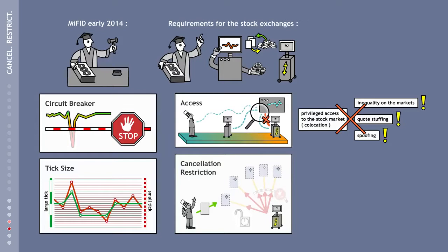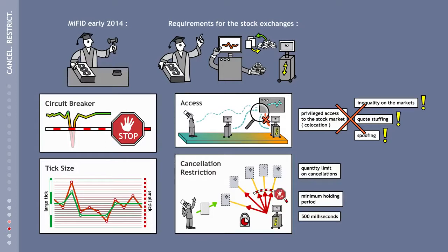Likewise, stock exchange operators have unfortunately only been asked, but are not obliged, to prevent the mass occurrence of phantom offers. There are two options for dealing with this: either by introducing limits on offer cancellations, or introducing a minimum holding period for offers. The European Parliament has proposed 500 milliseconds as the minimum retention period, but unfortunately was unsuccessful in this initiative.